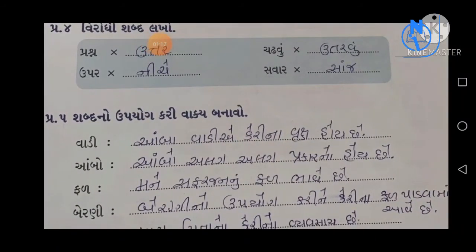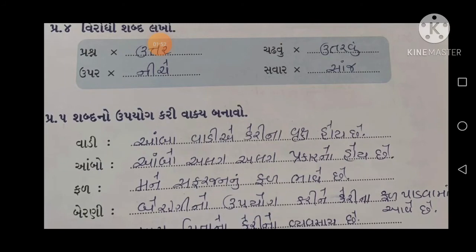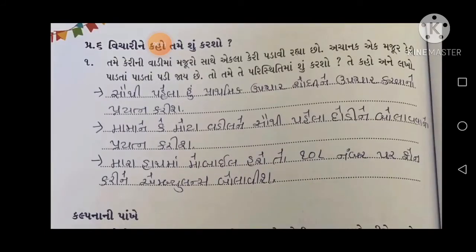Question number 5: શબ્દનો ઉપયોગ કરી વાક્ય બનાઓ — જે શબ્દ આપ્યો છે એનો ઉપયોગ કરીને આખું વાક્ય બનાઓ. મેં બુકમાંથી જોઈને લખ્યું છે, તમે પણ લખી શકો. આમ્બા વાડીમાં કેરીના વૃક્ષ હોય છે. આમ્બો અલગ અલગ પ્રકારનો હોય છે. ફળ — મને સફરજનનું ફળ ભાવે છે.